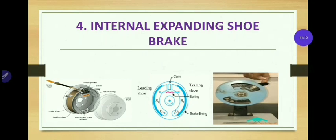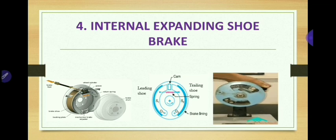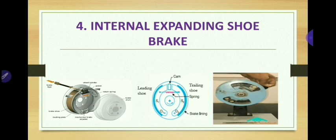Next, we look at internal expanding shoe brakes. In this type, two shoes S1 and S2 are used and pressed against the rotating drum with the help of a cam, stopping the rotation. The outer surface of the shoes are lined with friction material to increase the coefficient of friction and prevent wearing of the metal. Each shoe is pivoted at one end at fixed fulcrum points O1 and O2, and made to contact with a cam at the other end, which may be a piston-cylinder or cam arrangement as shown in the central figure.